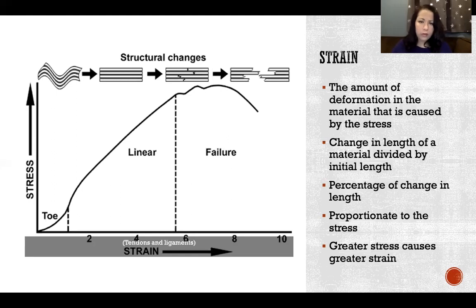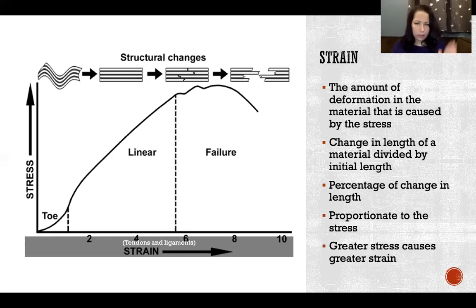In this picture here we're seeing the stress-strain curve of tendons and ligaments. On the left we see the stress is increasing as we go up, and on the bottom we're seeing the strain is increasing as we go to the right. This is a typical stress-strain curve presented this way.